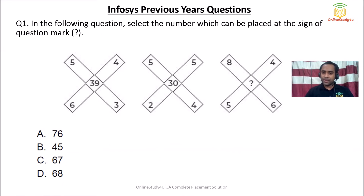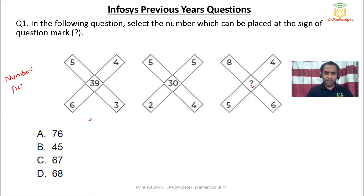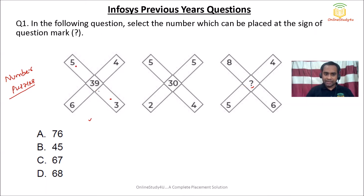In question number one, we need to find out the missing value. First we need to understand the trend — this is a number puzzles question. You need to find out the missing number, and for that we need to find the pattern. What they have done is multiplied the diagonal numbers. So 5 into 3 is 15, and then they multiplied 6 with 4, so 6 into 4 is 24. Therefore 15 plus 24 is 39.